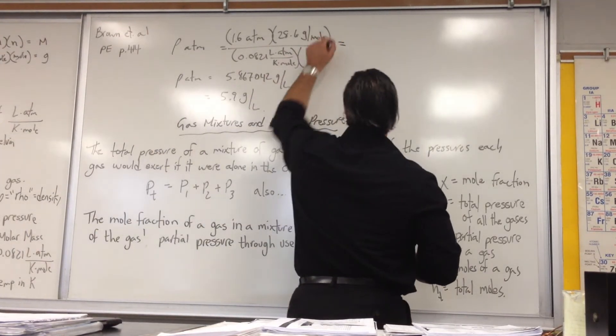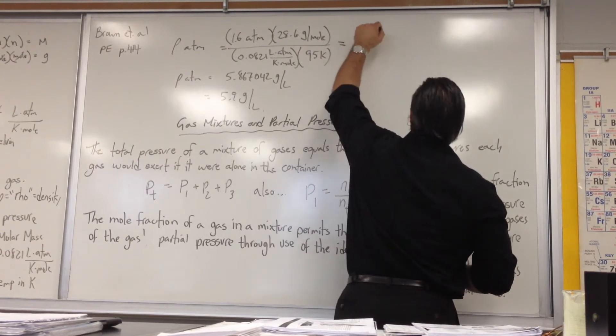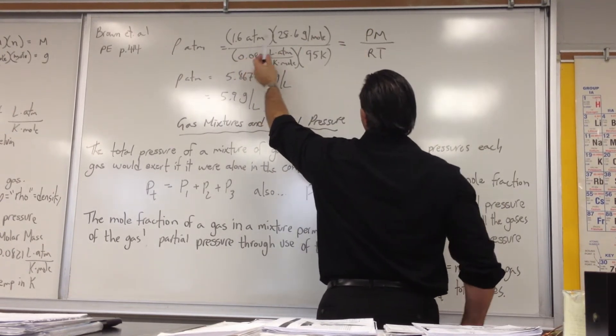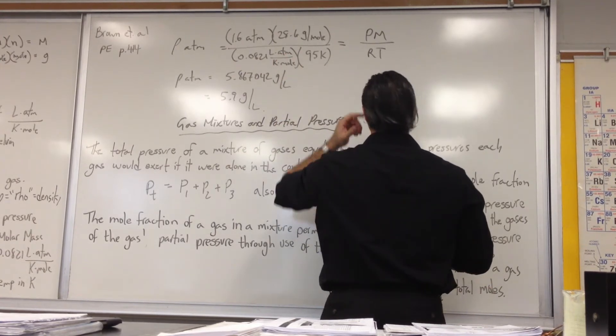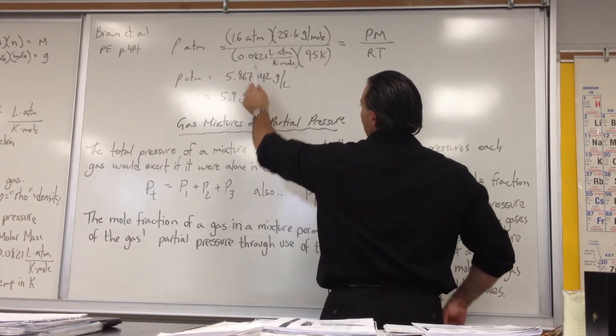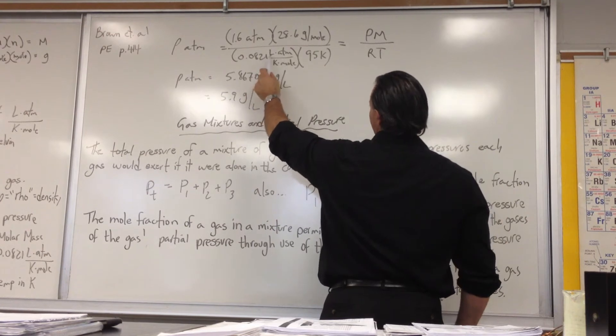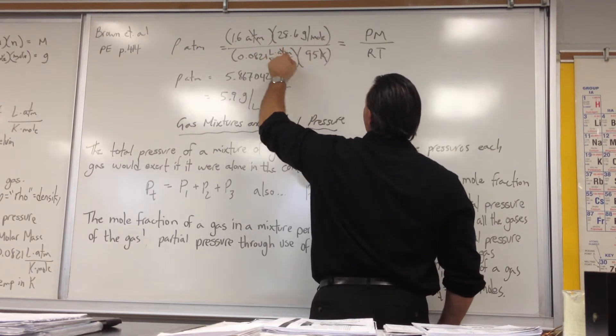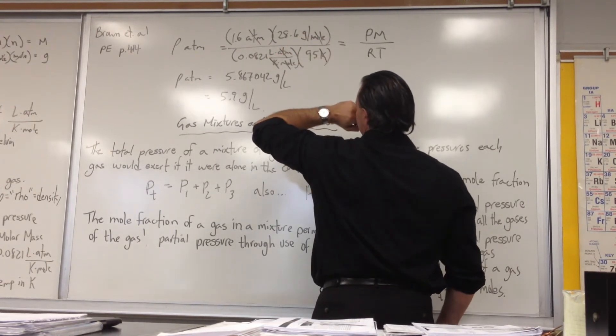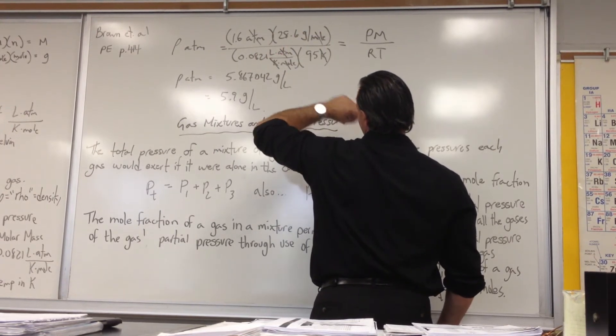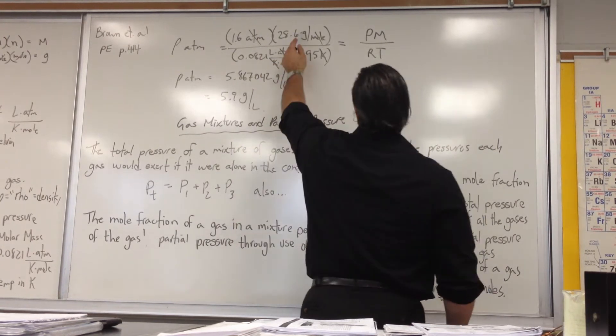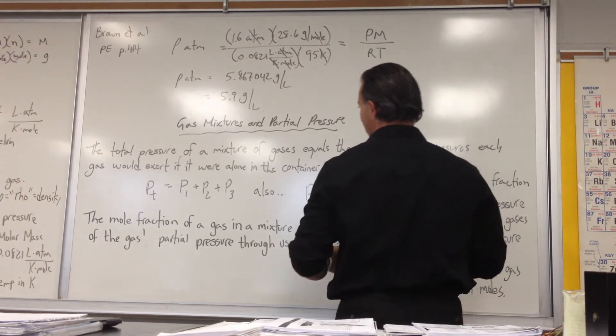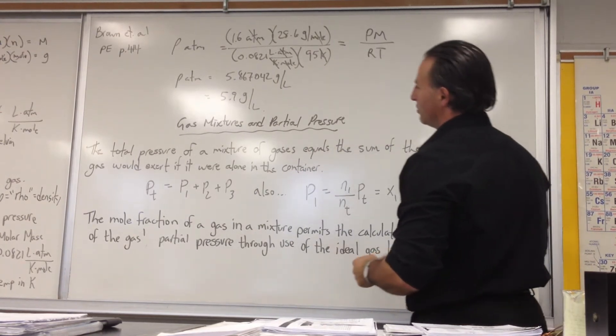So we did that here by inserting the values. Here's the equation we used. Density is equal to PM over RT. Here's the pressure of the surface of the planet. Here's the average molar mass of the atmosphere. Here's the gas constant in the units of liter atmospheres per Kelvin mole. You'll see that atmospheres cancel, Kelvins cancel, moles cancel, and you're left with liters and the grams, which is grams per liter. So the final answer is 5.9 grams per liter. I believe we're only allowed two significant figures.